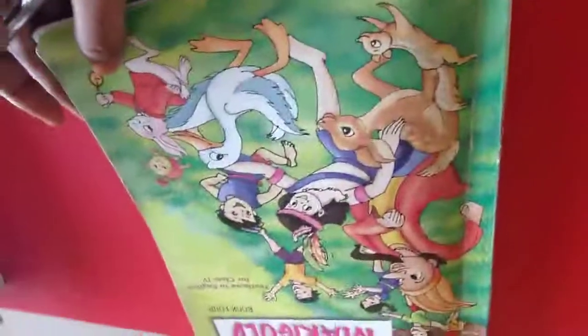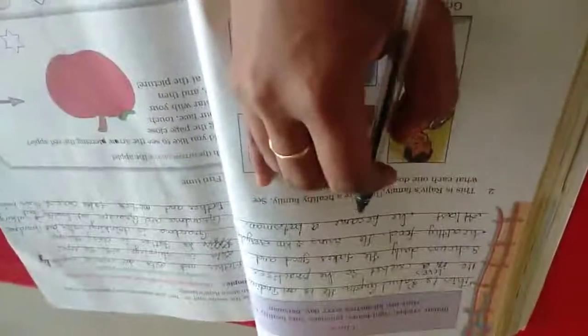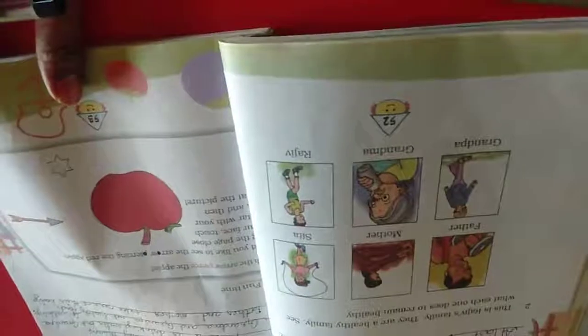Hello children, now just take your English book. We will do the bookmark exercise for lesson 3. Last class we have done up to this. Now we will do the remaining exercise on page number 52.